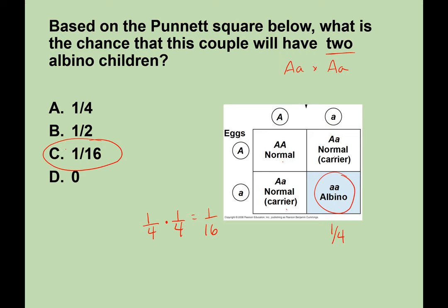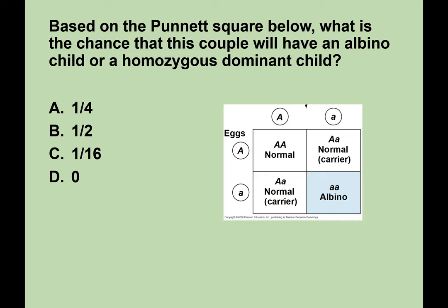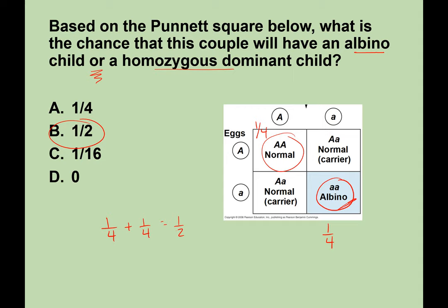Same Punnett square — what is the chance this couple will have an albino child or a homozygous dominant child? Now we have 'or,' so we use the addition rule. The chance of an albino child is ¼ and the chance of homozygous dominant is ¼, so ¼ + ¼ = ½. They have a 50% chance of having a child that is either genotype. Keeping probabilities as fractions makes it easier to apply multiplication or addition rules.